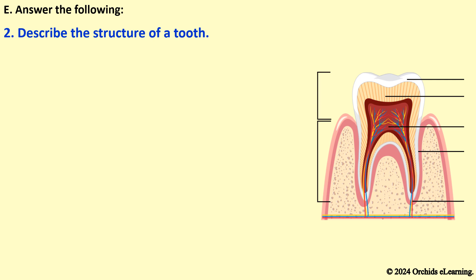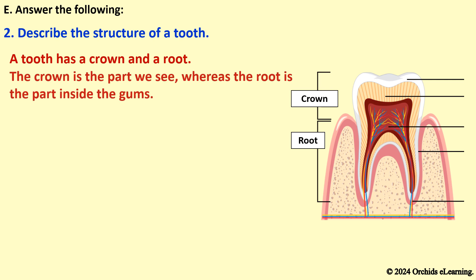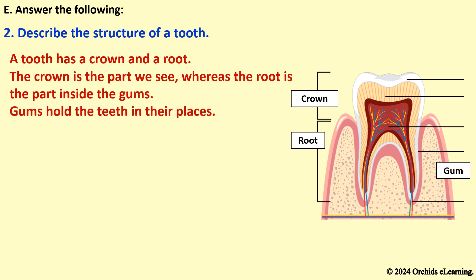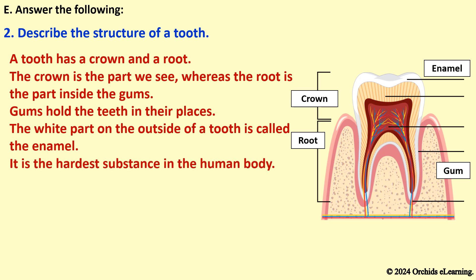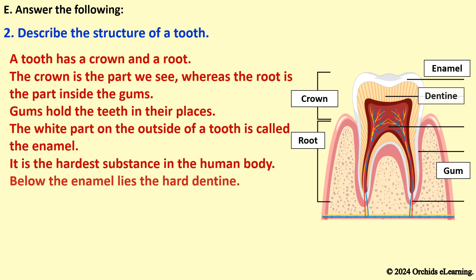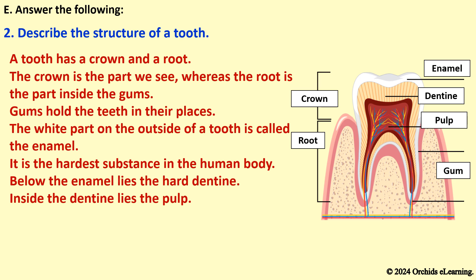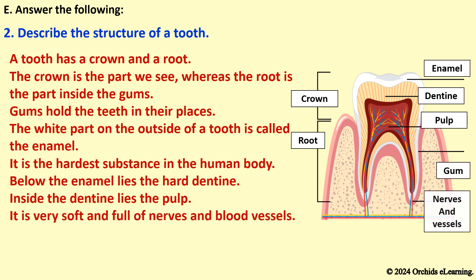Describe the structure of a tooth. A tooth has a crown and a root. The crown is the part we see, whereas the root is the part inside the gums. Gums hold the teeth in their places. The white part on the outside is called the enamel — the hardest substance in the human body. Below the enamel lies the hard dentine. Inside the dentine lies the pulp, which is very soft and full of nerves and blood vessels, forming the central part of the tooth.